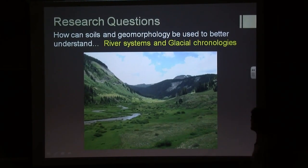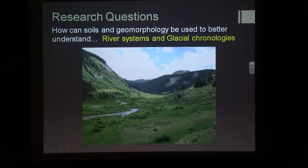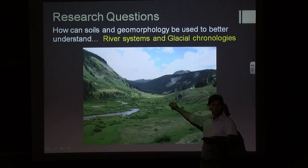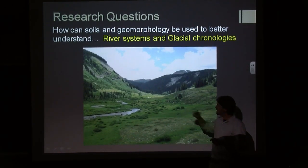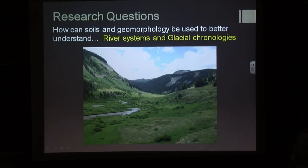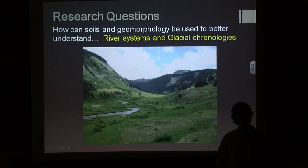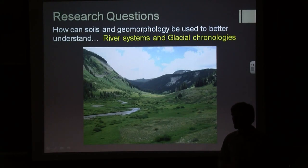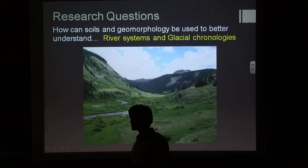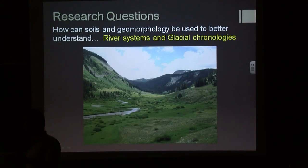The first research question: how can soils and geomorphology be used to better understand river systems and glacial chronologies? This is Treasure Creek, a tributary of the Alamosa River, which is a tributary of the Rio Grande — part of Dan's study area. What we do is go out in the field, map landforms, and create spatial patterns. Then we find the ages of those landforms using soil chronologies and carbon-14 data, putting together the spatial and temporal patterns of landscape evolution to say something about how environments change over time.